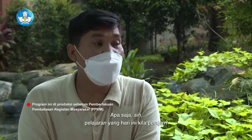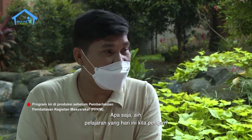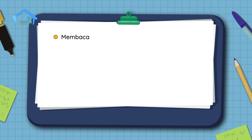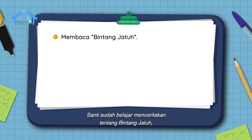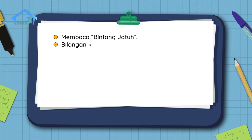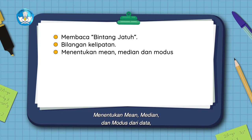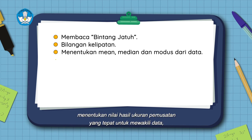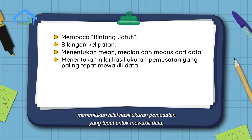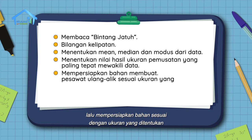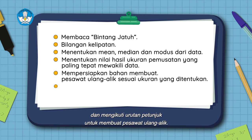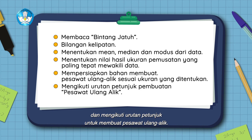Coba Santi sebutkan, apa saja pelajaran yang hari ini kita pelajari? Banyak, Pak. Santi sudah belajar menceritakan tentang bintang jatuh. Lalu Bapak ajarkan Santi tentang kelipatan bilangan, menentukan min, median, dan modus dari data, menentukan nilai hasil ukuran pemusatan yang tepat untuk mewakili data. Lalu mempersiapkan bahan sesuai dengan ukuran yang ditentukan dan mengikuti urutan petunjuk untuk membuat pesawat ulang alik.